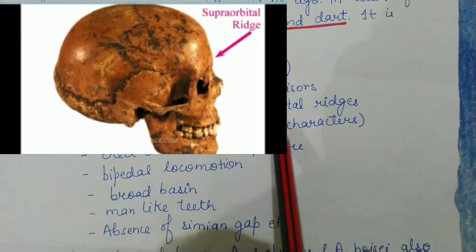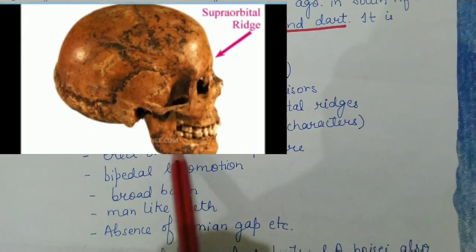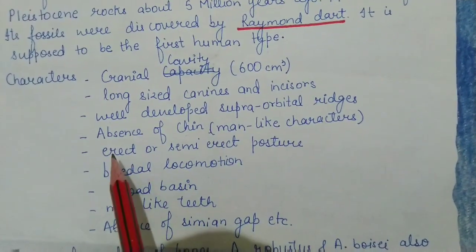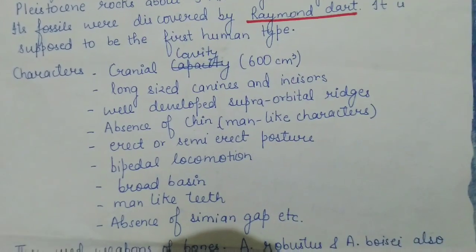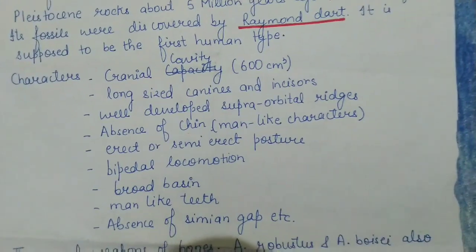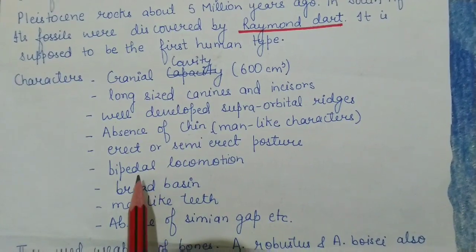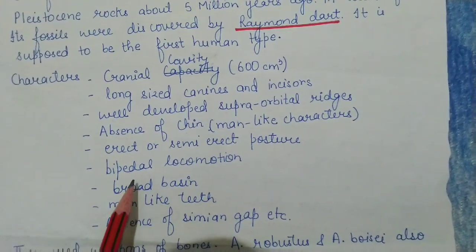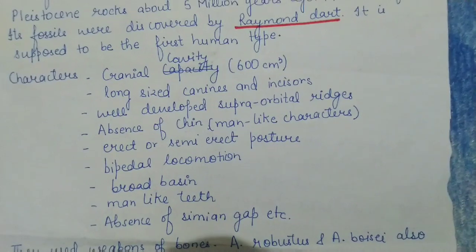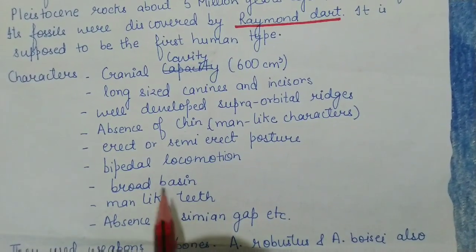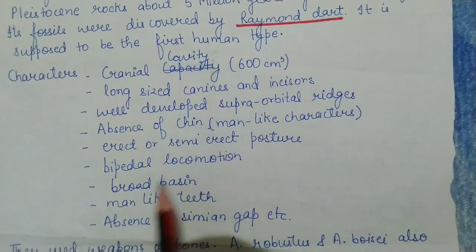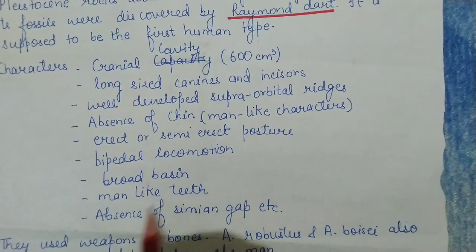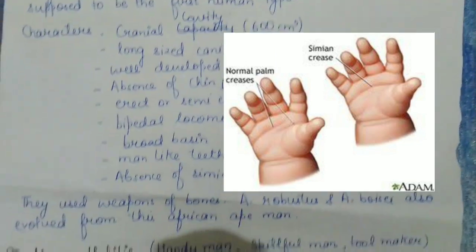The supra orbital ridges of Australopithecus were well developed as shown on screen. The next character is the absence of chin, a character shared with humans. Next is the erect or semi-erect posture — they were standing on the ground in a semi-erect kind of posture. They also had bipedal locomotion and a broad pelvis.